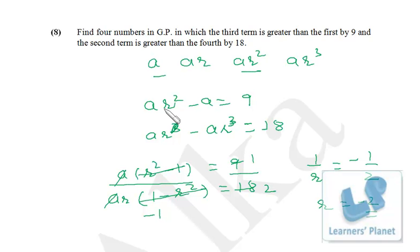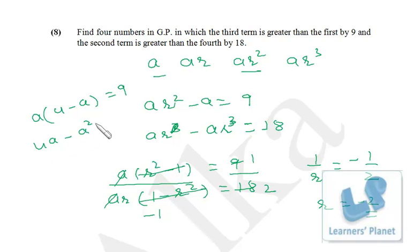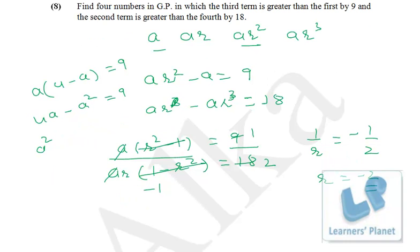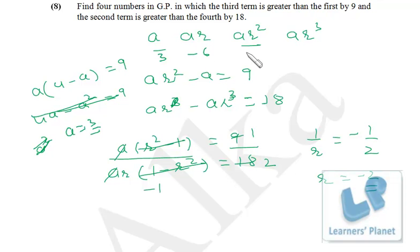Substituting r = −2 into a(r² − 1) = 9: a(4 − 1) = 9, so 3a = 9, giving a = 3. Therefore the four terms are: 3, −6, 12, −24.